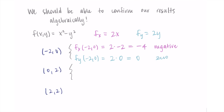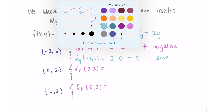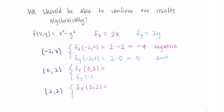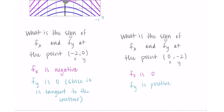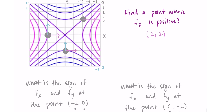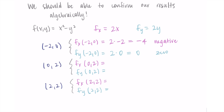I'm going to leave the remaining computations up to you. You can go through the same calculations, plugging in the points 2, 2 and 0, negative 2 into both partial derivatives. You can find the full solutions in the notes. You will get things that confirm the same conclusions we came to previously. This shows you can approach partial derivatives both algebraically or geometrically.